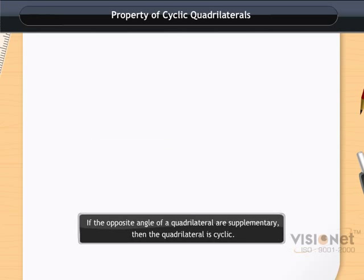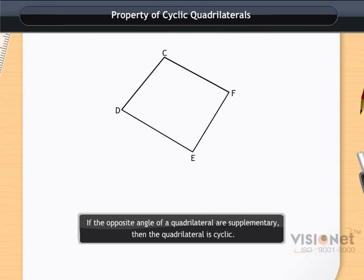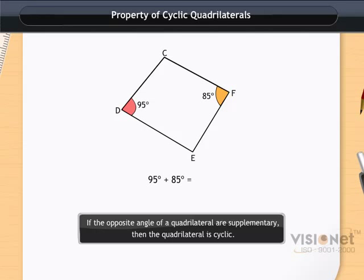Using this property we can check whether a quadrilateral is cyclic or not. For example, look at quadrilateral CDEF. Angle D is equal to 95 degrees and angle F is equal to 85 degrees. Adding them: 95 degrees plus 85 degrees equals 180 degrees.